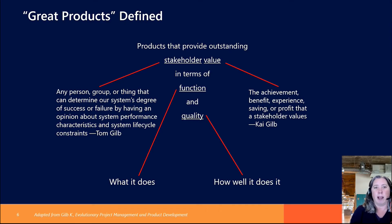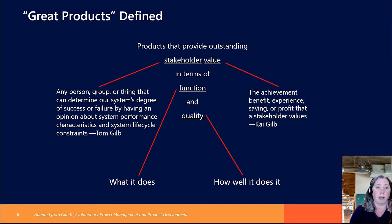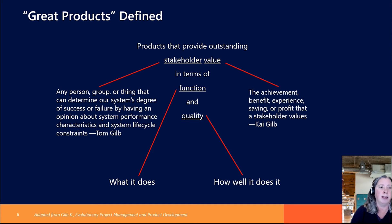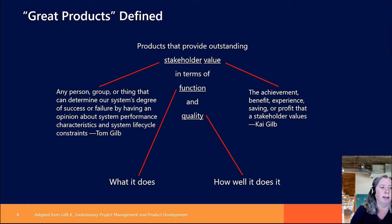Stakeholders — we care about them because they're the people who can help us build great products that provide outstanding value. First, we need to know who they are: a person, a group, a thing — something that can determine the system's degree of success or failure by having an opinion about its performance. They want some sort of benefit, achievement, experience, outcome, savings, or profit — something they're going to obtain through the work that we're doing.